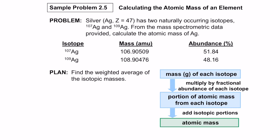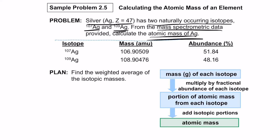For silver — Z=47 — there are two naturally occurring isotopes: ¹⁰⁷Ag and ¹⁰⁹Ag. From mass spectrometry data, we are asked to calculate the atomic mass of silver.